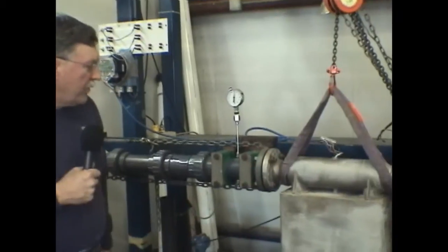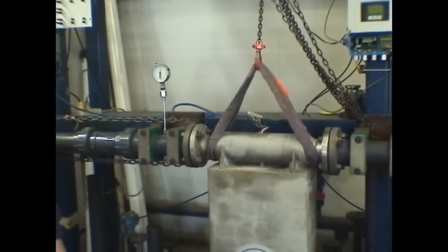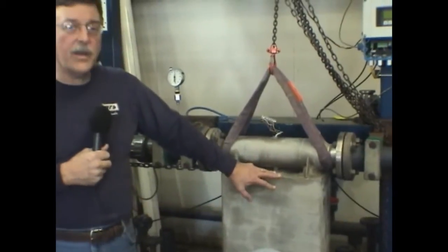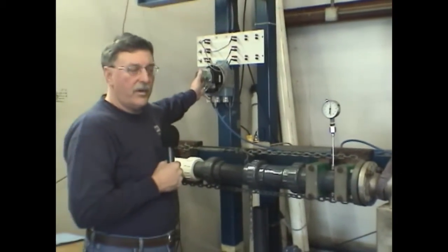Today we're going to use a Coriolis mass flow meter. This particular one is a Micromotion. We have an element here sitting in line and a transmitter over here.